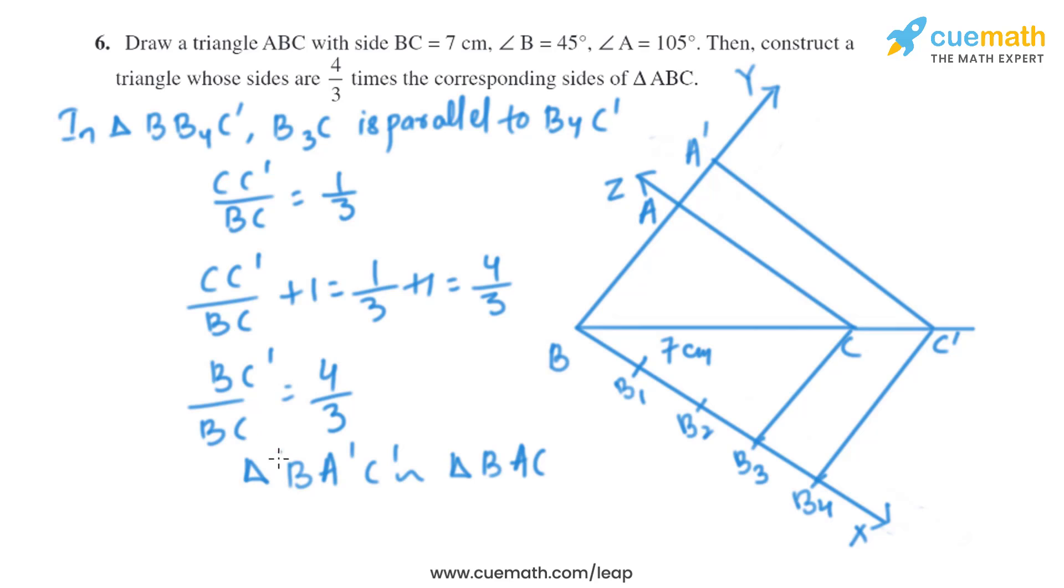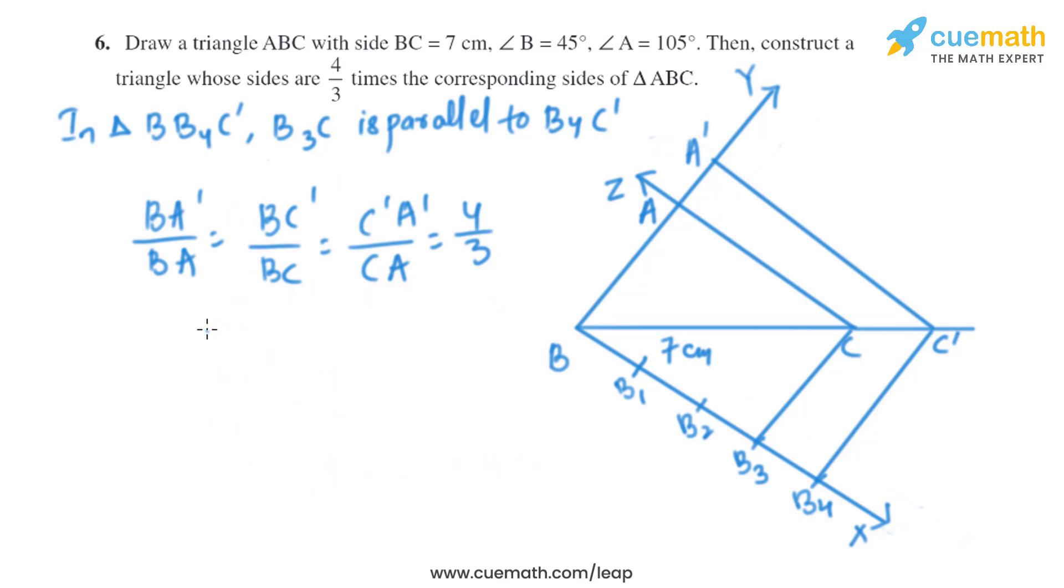And triangle BA'C' is similar to triangle BAC using AA similarity criteria. So the corresponding sides are in proportion. We'll get BA' by BA equals BC' by BC equals C'A' by CA equals 4 by 3.